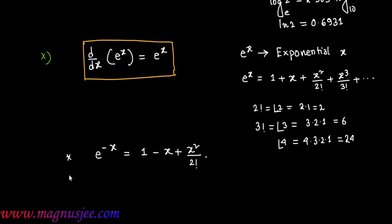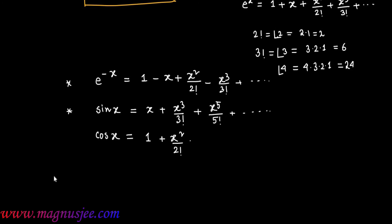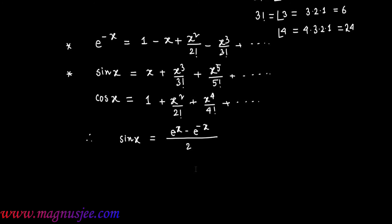e^(−x) = 1 − x + x²/2! − x³/3! + ⋯ Also, sin x can be written as (e^x − e^(−x))/2, and cos x can be written as (e^x + e^(−x))/2. That is why sin x and cos x can be expressed in terms of the exponential function.